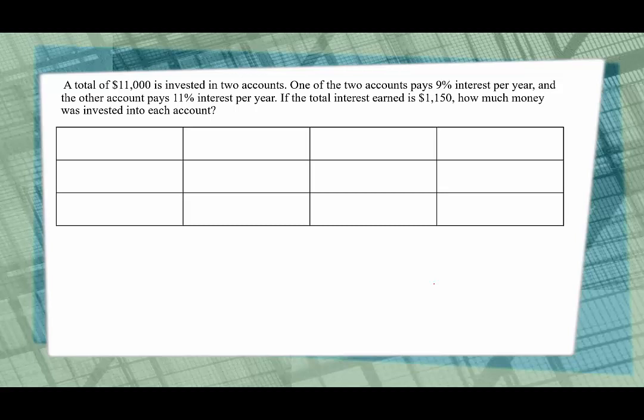What are we labeling our table? Here we're going to talk about the account that pays 9% interest. We're going to say 9% account, and here I'm going to have the 11% account, and then this is going to be my total column. What information do I know about these accounts? Well I know that money was invested into them, so we're going to call this money invested. And then what's the other thing we know? We know that there's interest earned.